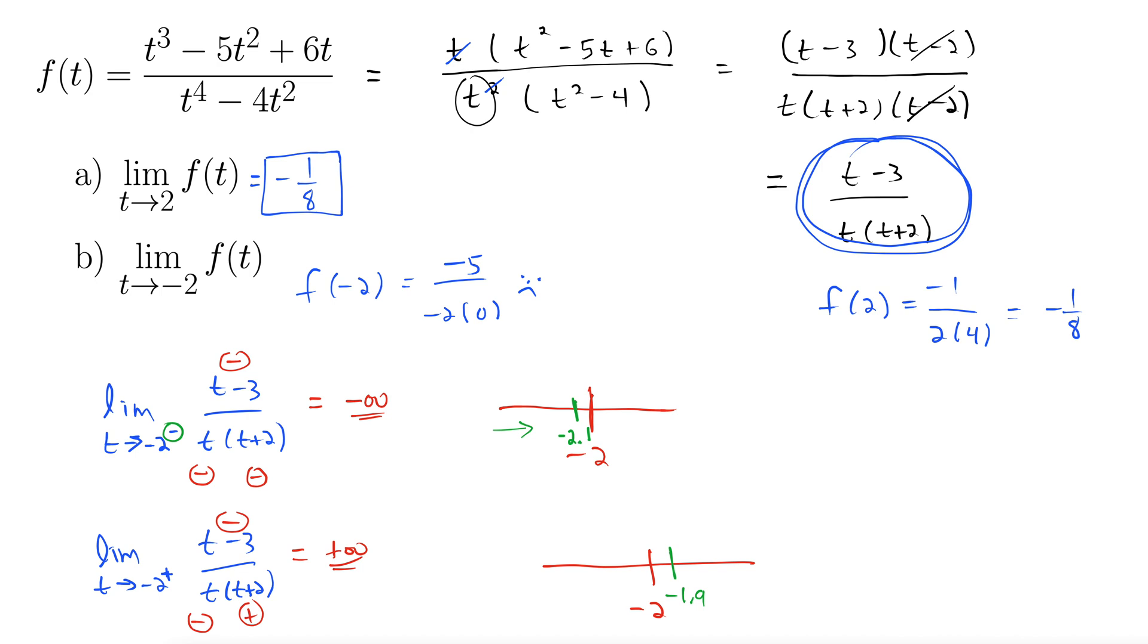But remember, the limit exists at a point if and only if the one-sided limits at that point are equal. And here we have the left side going to negative infinity and the right side going to positive infinity. Thus, the limit at negative 2 does not exist.